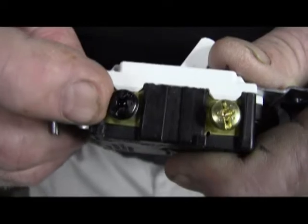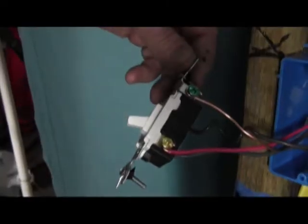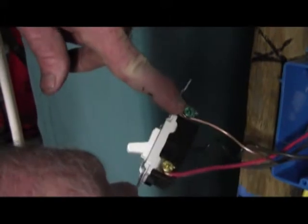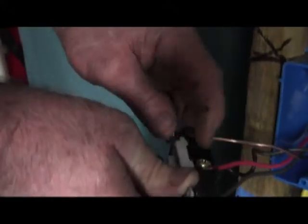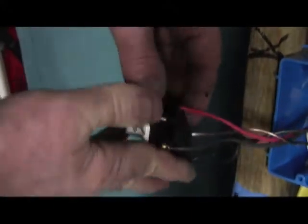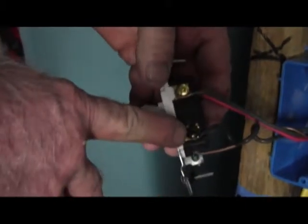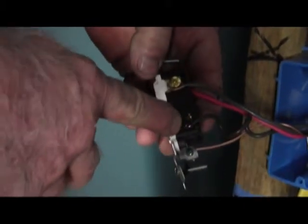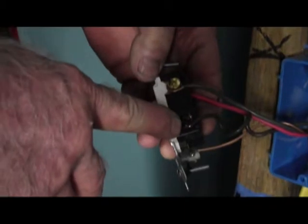This is our three-way switch and first note that it is legally grounded. Now we have our two travelers which you see are connected to the bronze colored or brass colored wires. We now have our leg, and like I said, it doesn't matter whether it's line or load. It's a leg, it goes on to the leg screw.